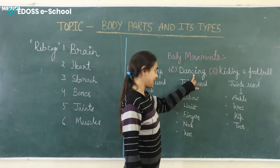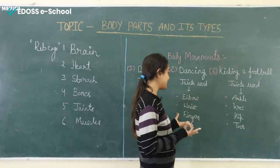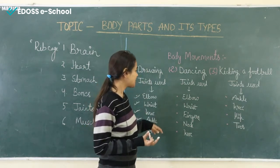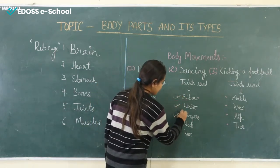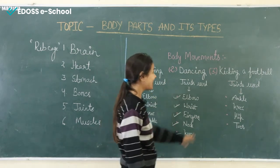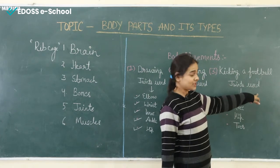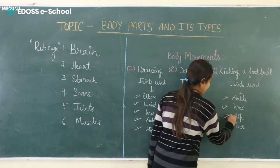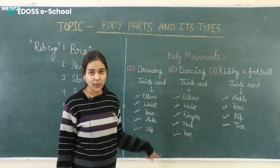When we are dancing, the joints used are elbow, wrist, fingers, neck, and knee. Next, kicking a ball — the joints used are ankle, knee, hip, and toes. So these are the examples of joints and the body movements where joints are used.